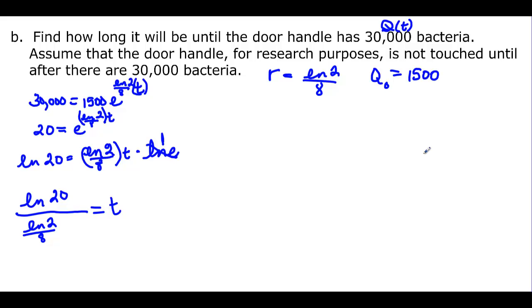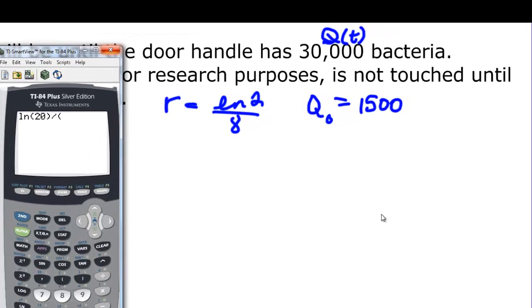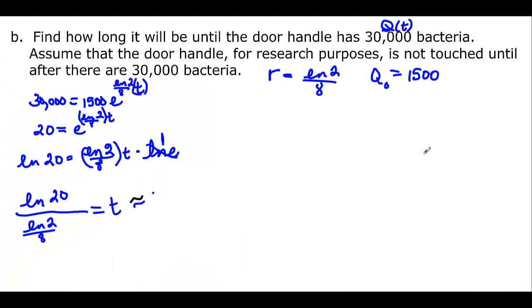And if we take that to our calculator to find out exactly how much time that means, we have ln 20 divided by, and then I'm putting parentheses around the denominator since it's got an operation in it. So ln 2, close the argument, divided by 8, and then use a parentheses to close the denominator, and we find out that it's going to be about 34 and a half months, a little bit more than that. So approximately 34.6 months.